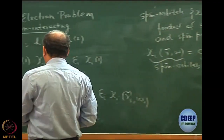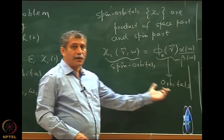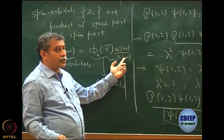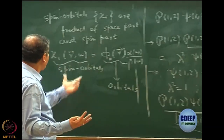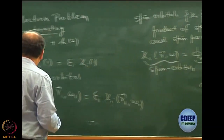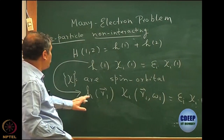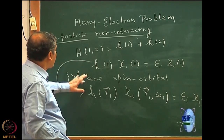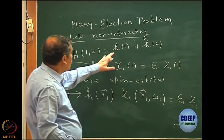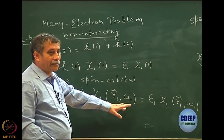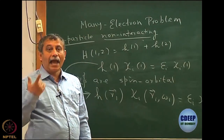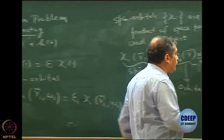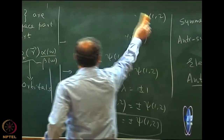Spin is very simple for a one-particle problem — you simply attach it. That is the reason I said orbital is a three-dimensional quantity, and spin orbital is a four-dimensional quantity because r has three dimensions and omega adds one dimension. So you have four dimensions total for spin orbitals. Now let us assume we know how to solve this one-particle problem for a non-interacting Hamiltonian. The eigenfunction of this must be a product of spin orbitals, but this product must be an anti-symmetrized product.